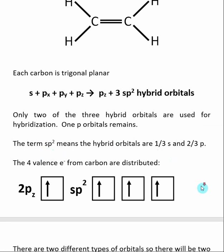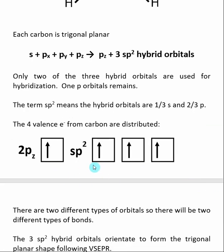We look at the electron configuration for these orbitals, so we have three sp² hybridized orbitals, and then we have a single p-orbital left over.